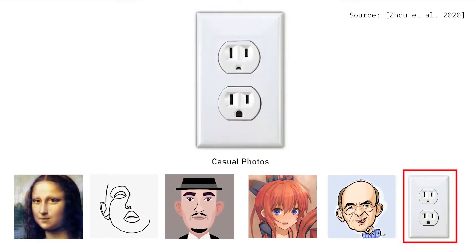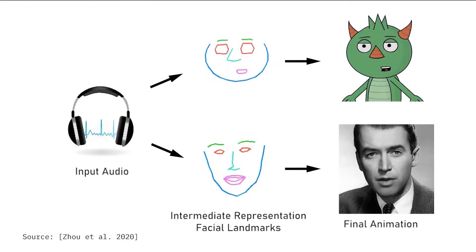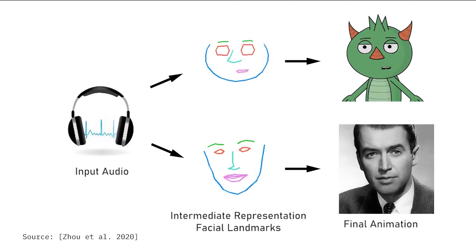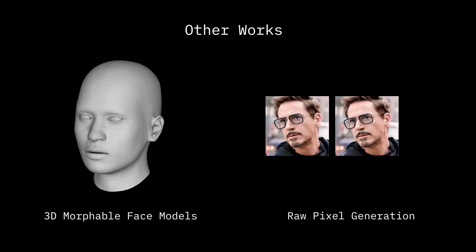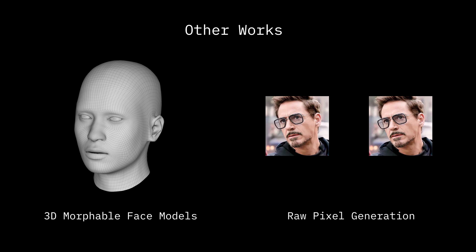To be able to do this, their technique predicts facial landmarks, as seen here, as an intermediate representation that also preserves the speaker characteristics. In contrast, other techniques in the field directly generate either 3D morphable face models or raw pixels. This limits them to synthesizing animations with just human faces, and a general difficulty in generalizing to things like cartoons and sketches.